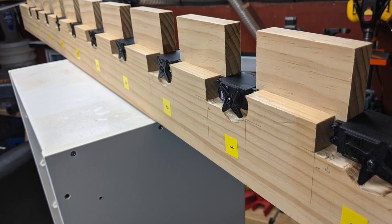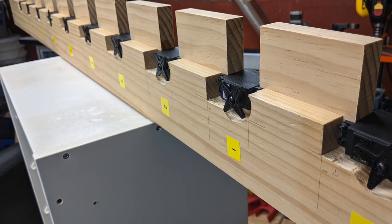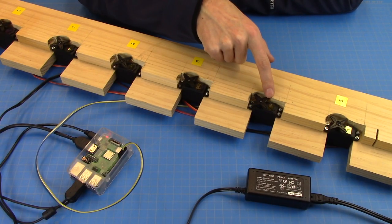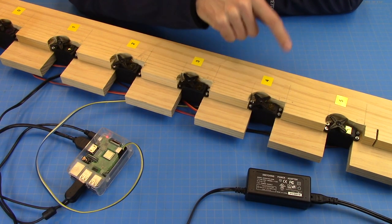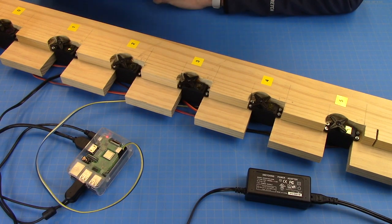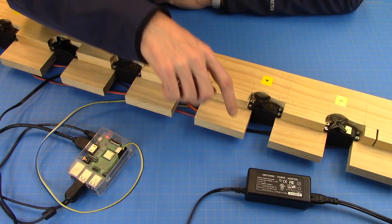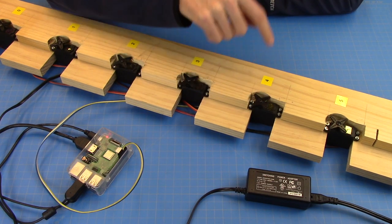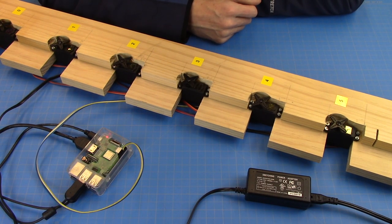So this prototype is from 2017, before I got a CNC router. And you can see that the woodworking on these is a little bit rough because I cut these with a chop saw for the straight cuts. And then the round cutouts for the rotating parts I made with a handheld trim router.